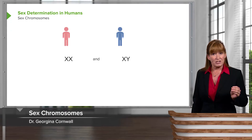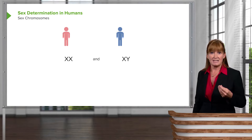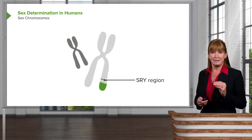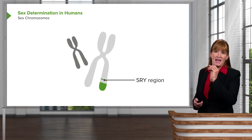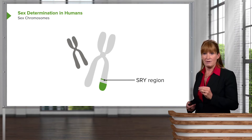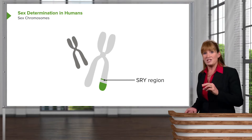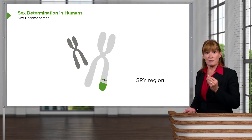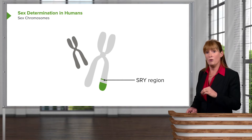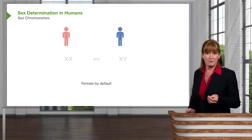So sex determination in humans — you're probably fairly familiar with this. The female has a possibility of contributing X and X, and the male could contribute an X or a Y. The Y chromosome is a little bit special: it's tiny, but it also has a gene on it involved in sex determination called the SRY region — the sex determining region of the Y chromosome. If that gene is present and expressed, we will see maleness. But if that gene is not present, maybe there's no Y chromosome or maybe the gene is broken, then by default we will see the female phenotype.